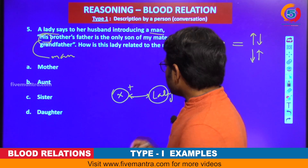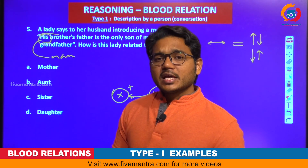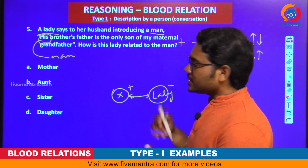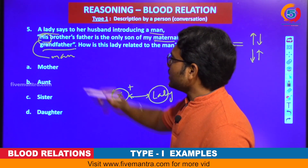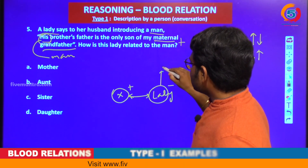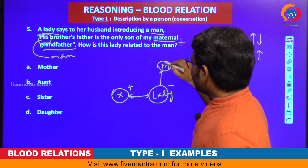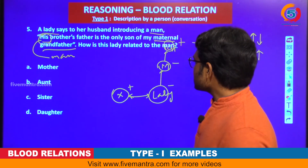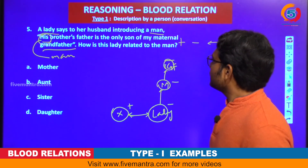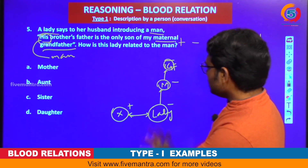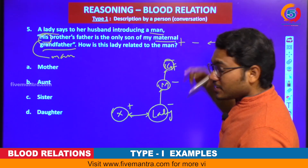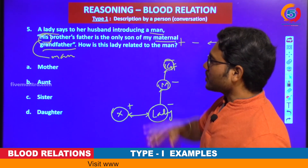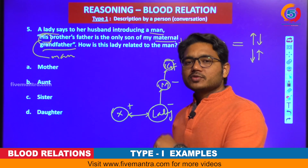As I already told you, first we have to identify the center person — that is the lady — and we have to identify the generation above the person speaking. The lady is the center person. If you see the generation above, she is talking about her maternal grandfather. So maternal grandfather means her mother's father. We are tracing this part of the tree: lady → mother → maternal grandfather.